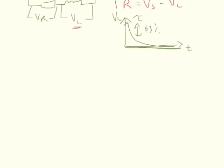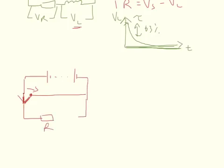Now we need to look at discharging — when you turn it off. Let's redraw the circuit. When you turn it off you need a pathway for current to continue running through. The switch goes to a position that provides a pathway through the resistor and inductor. If that pathway is not there you won't have any current flow, but you will probably get sparks produced around the switch as you turn it off, which can be quite dangerous.